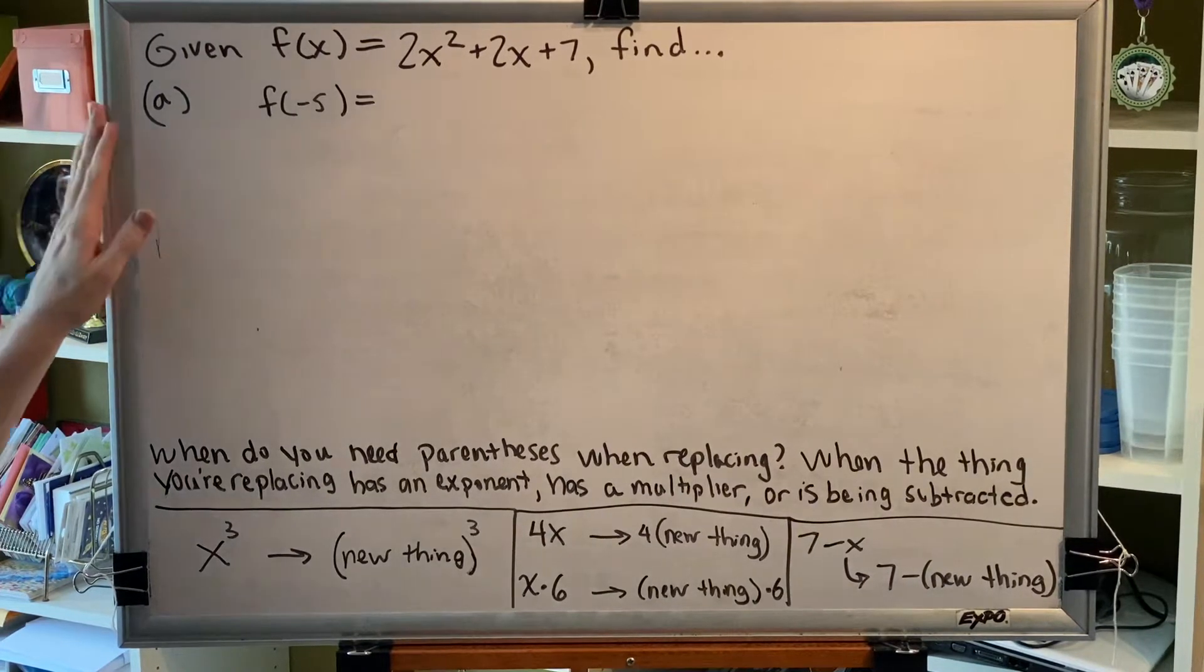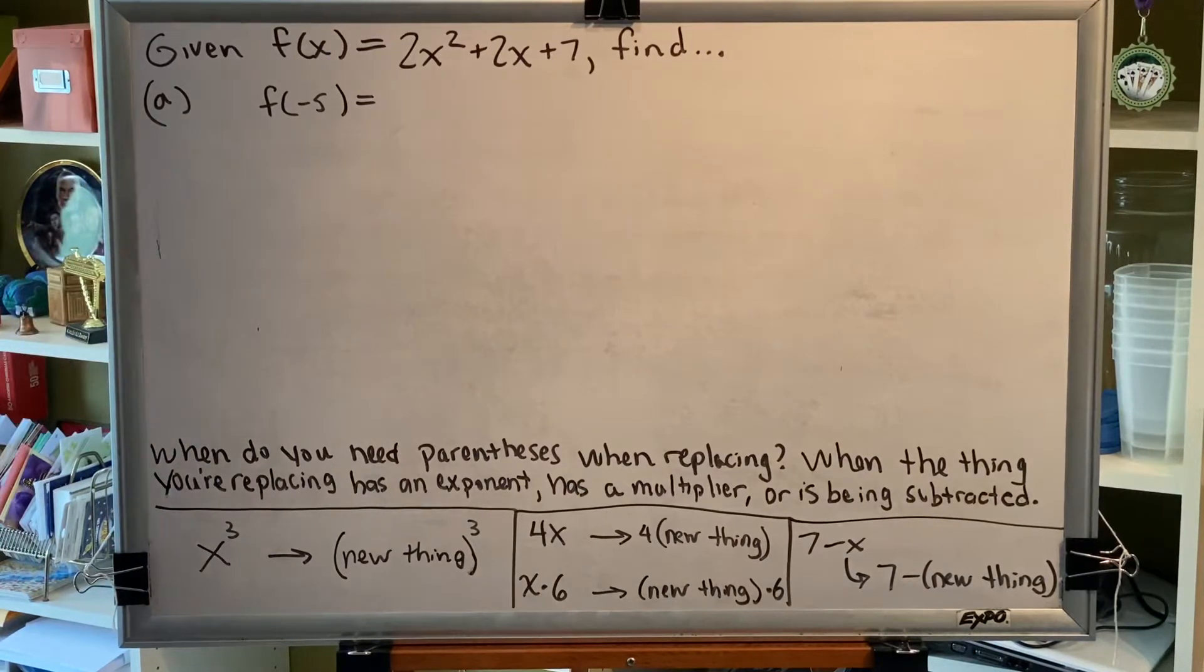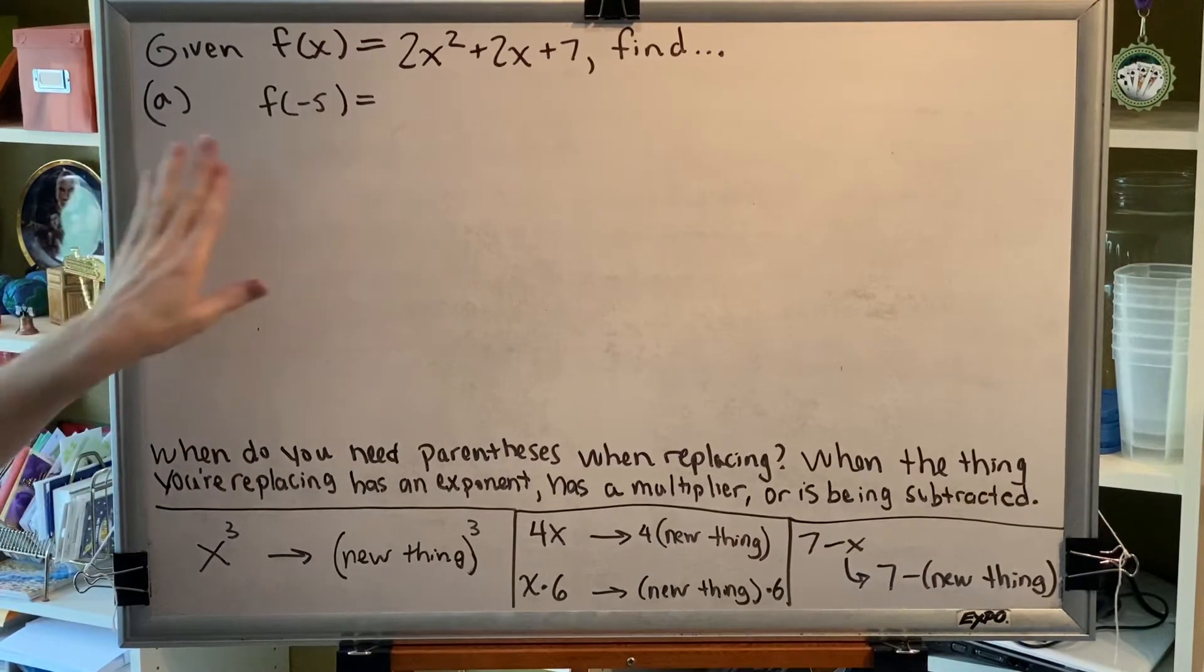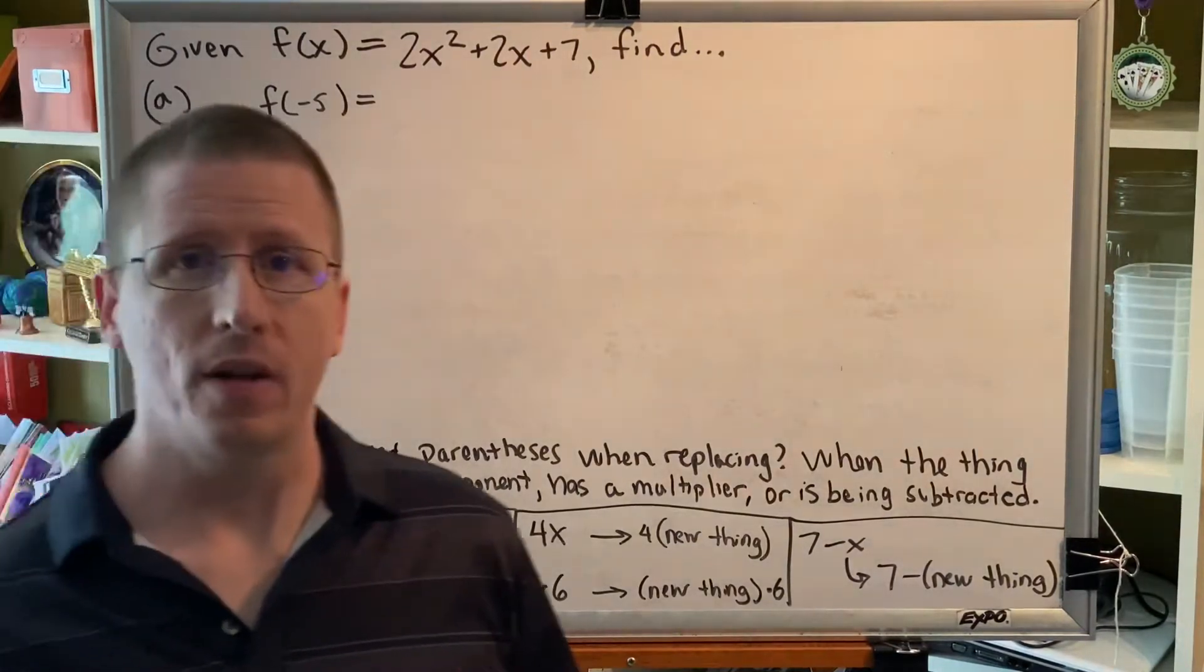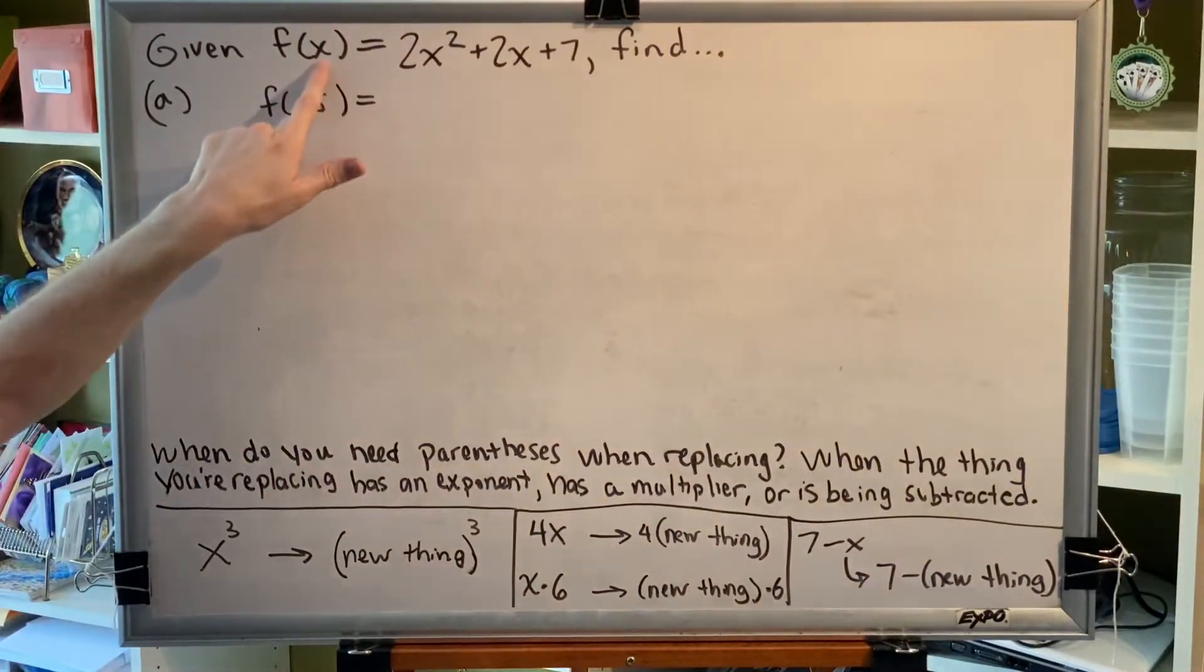Given f(x) = 2x² + 7x + 7, find part A, f(-5). Okay, so this is actually a pretty simple idea.